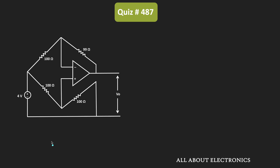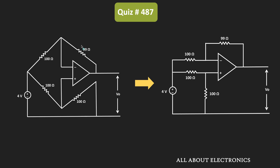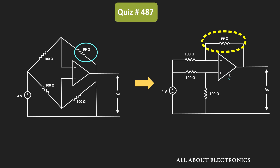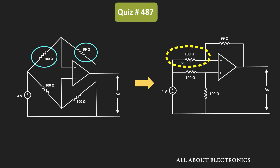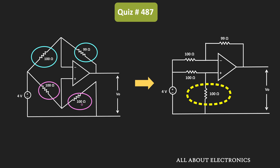If you closely observe this circuit, then it can be redrawn like this. This resistor is the feedback resistor between the output and the inverting terminal, while this 100 Ohm resistor is between the inverting terminal and the input voltage. Likewise, this 100 Ohm resistor is between the non-inverting terminal and the input voltage, and this 100 Ohm resistor is between the non-inverting terminal and the ground terminal.